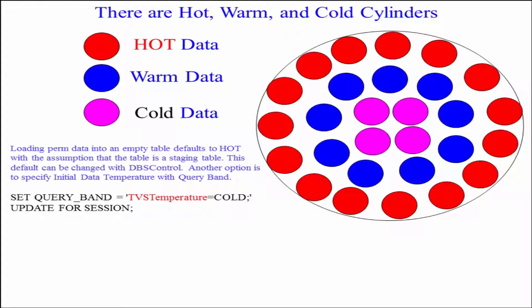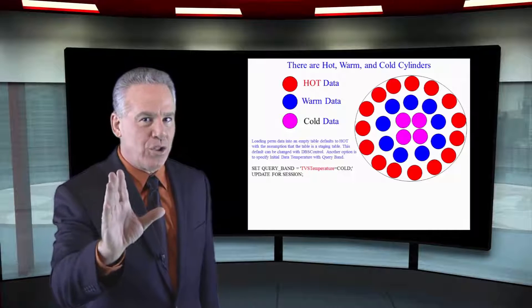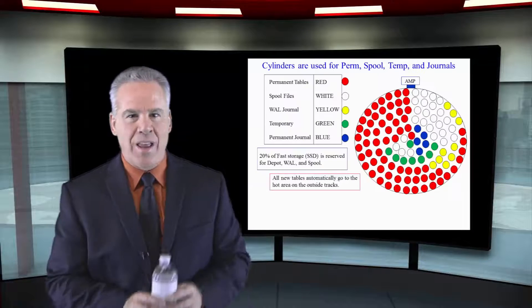As you can see here again we've got the hot data, the warm data, and the cold data. And about 10% of the data will move per week transitioning itself to the proper temperature position.